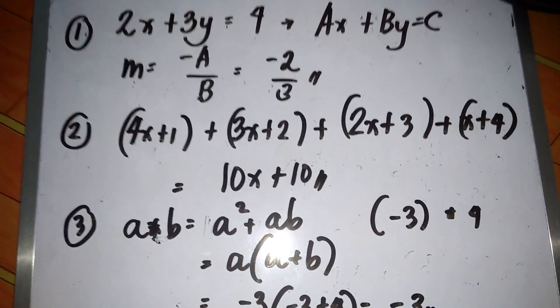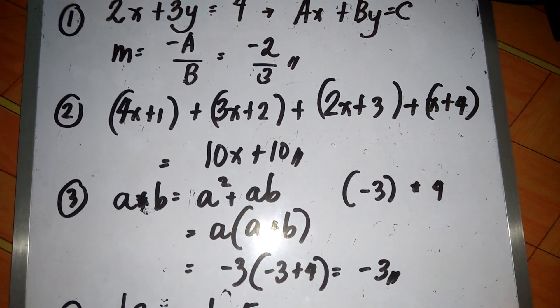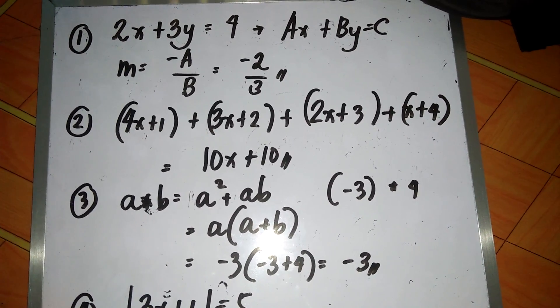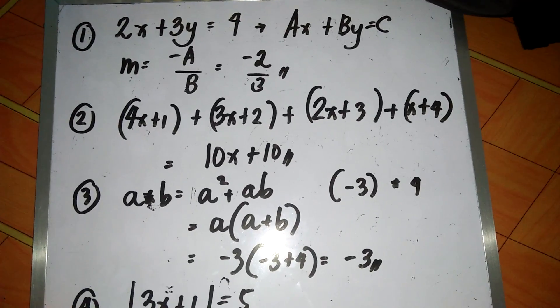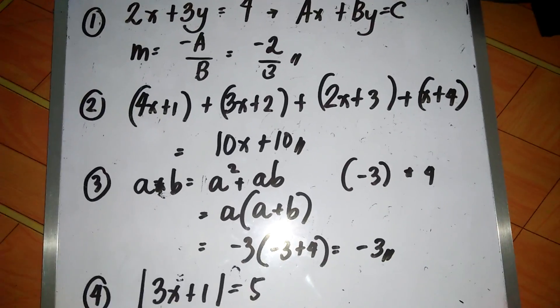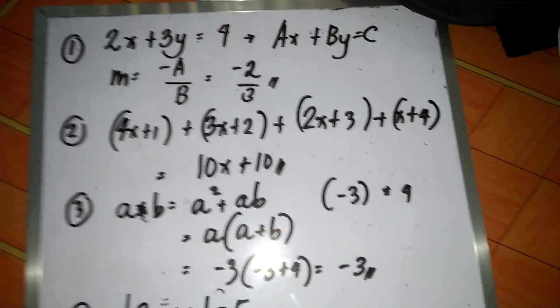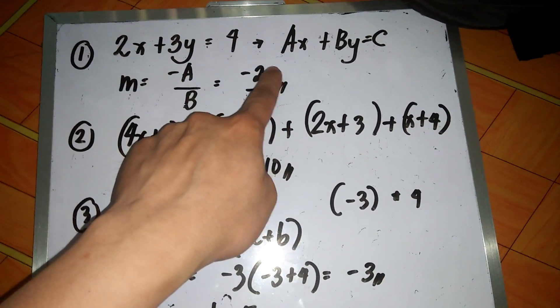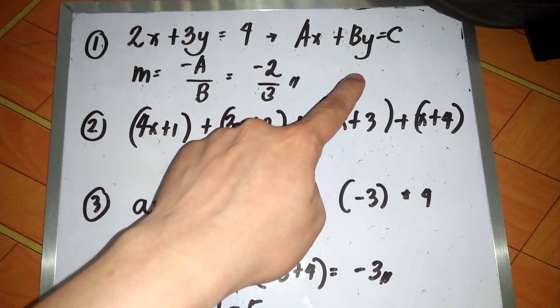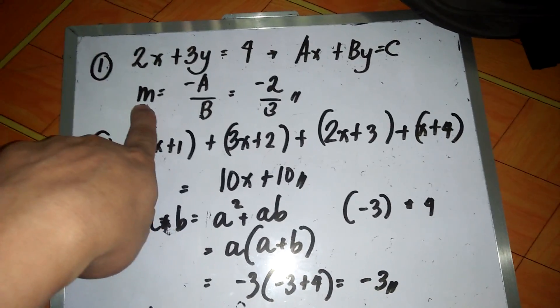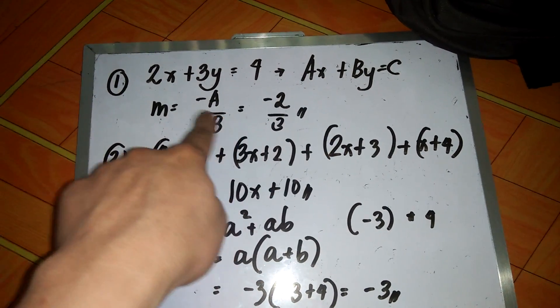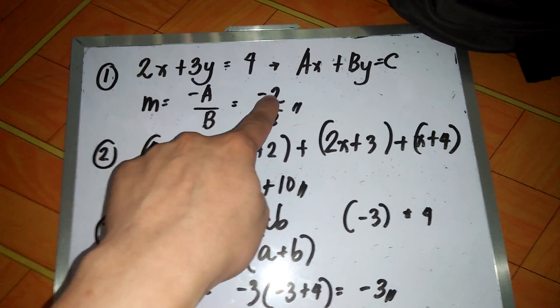We can start right ahead. For question number one, what is the slope of the line with the equation 2x plus 3y is equal to 4? For this case, we just need to know that this is in the standard form of the equation of the line, which is Ax plus By is equal to C. Then the shortcut for this is that the slope is equal to negative A over B. So that is negative A, which is the coefficient of x, so negative 2 over B, which is the coefficient of y, that is 3, or negative two-thirds.